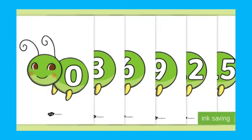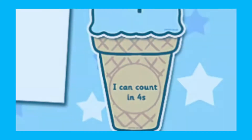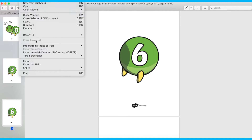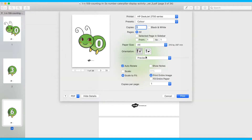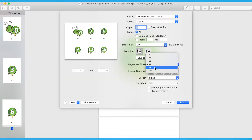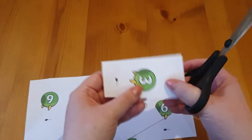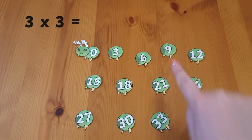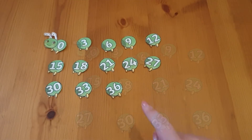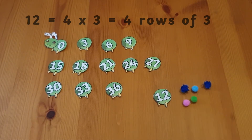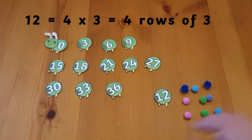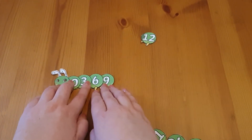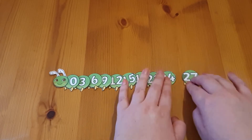These counting in threes on a caterpillar and counting in fours on ice cream activities are great to support children when learning specific times tables. Print the caterpillar with more than one to a page, cut them out, and use them to help practise your child's three times tables. Ask your child a question and see if they can find the answer. When you are confident that they know specific times tables, you could display the caterpillar showing the answers they know. It always helps children to see the multiples in order too.